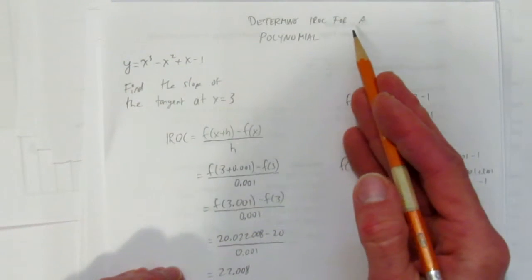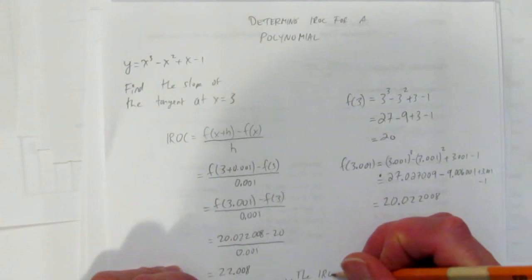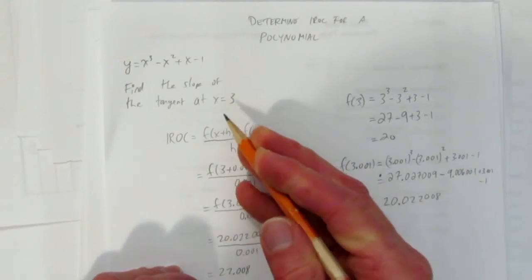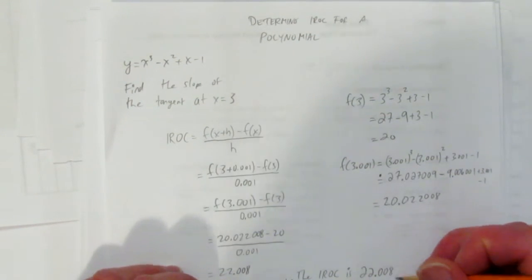We're done. We've determined the IROC for a polynomial. The instantaneous rate of change at x equals 3 is 22.008.